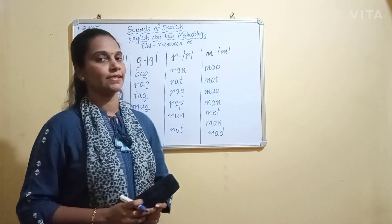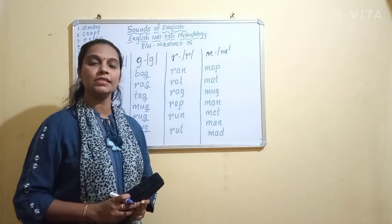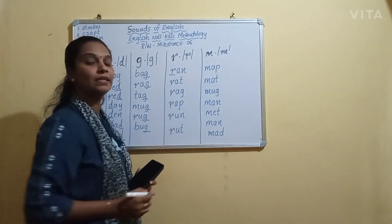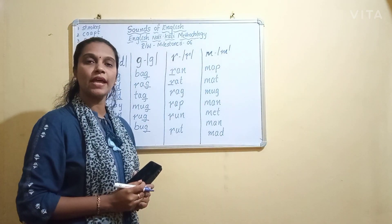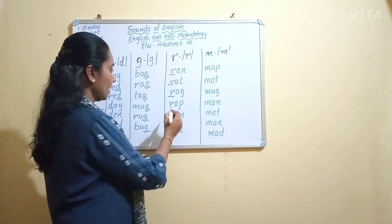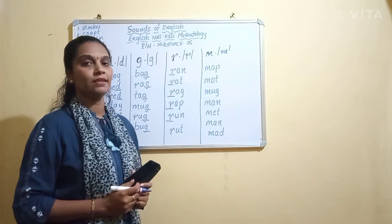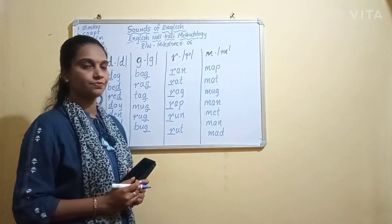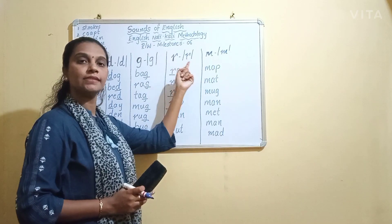Let us revise these three sounds once again — U says A, D says D, G says G. Shall we move to the next letter? Yes. The next letter is R. R says R.